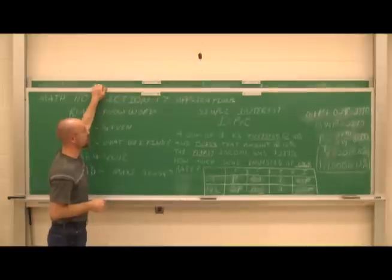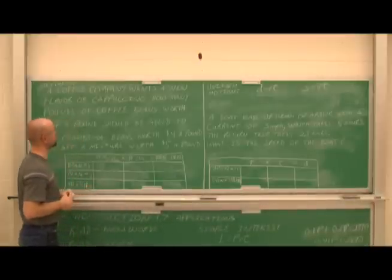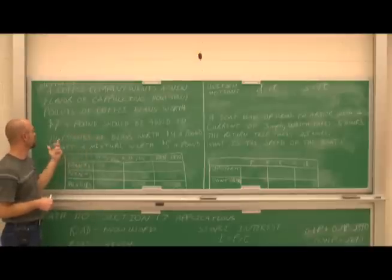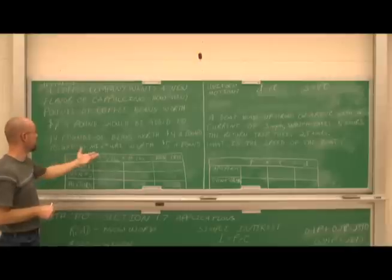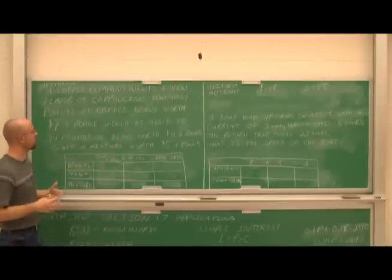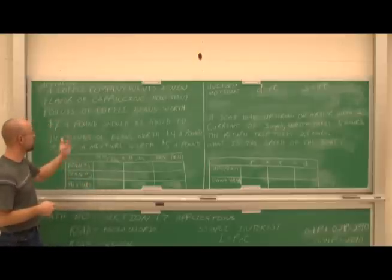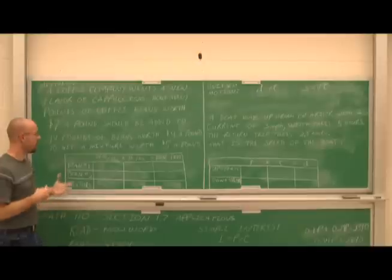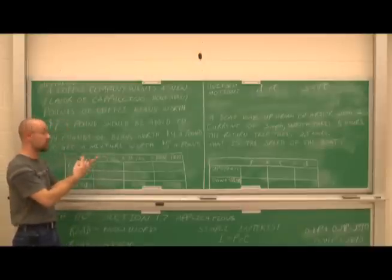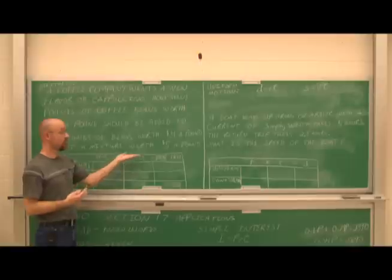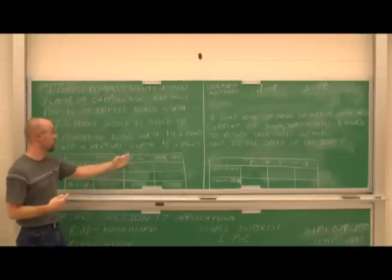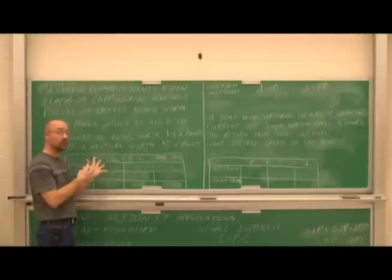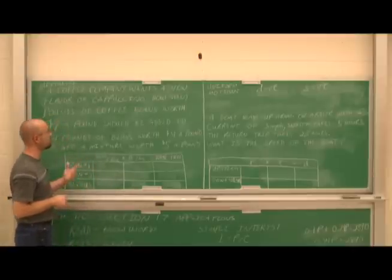We're going to move on to another application problem. This one deals with mixtures. A coffee company wants a new flavor of cappuccino. How many pounds of coffee beans worth $7 a pound should be added to 14 pounds of beans worth $4 a pound to get a mixture worth $5 a pound? Reading it the first time: I understand pounds, and I understand that two types of beans with different values are being mixed together. Reading it a second time for given information.